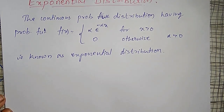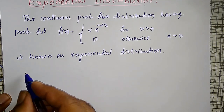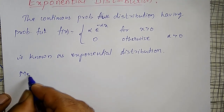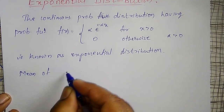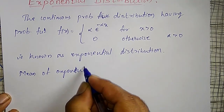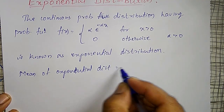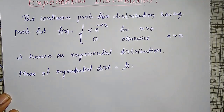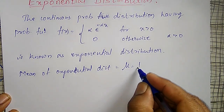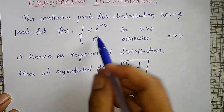Now, using this probability distribution, I will define the key parameters. The mean of the exponential distribution is given by μ = 1/α. This α is the constant parameter of the distribution.